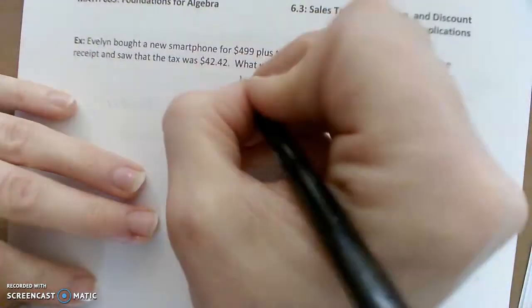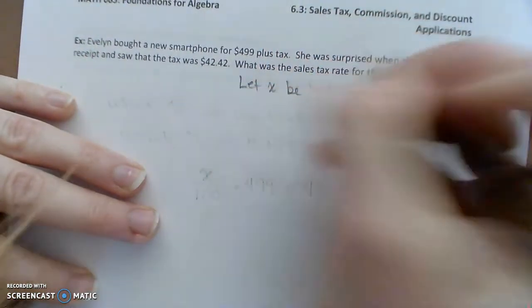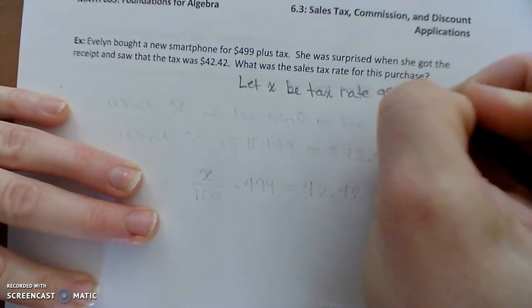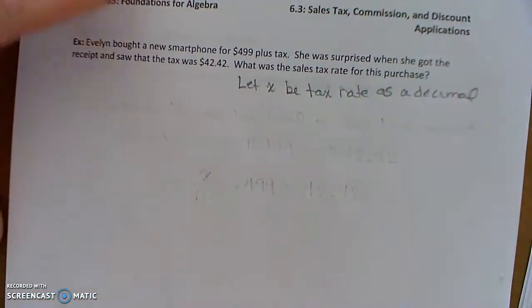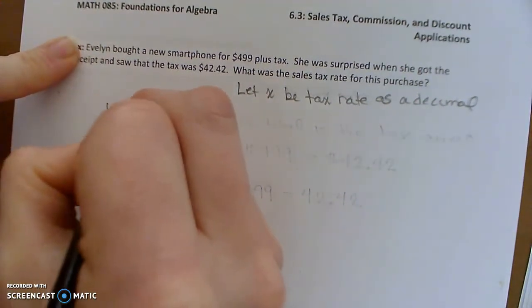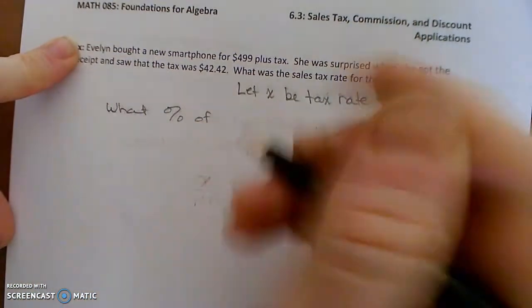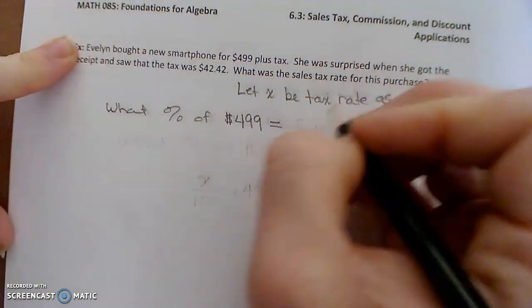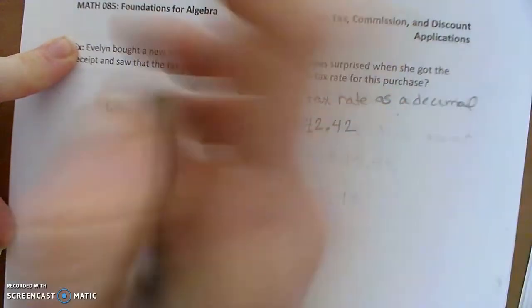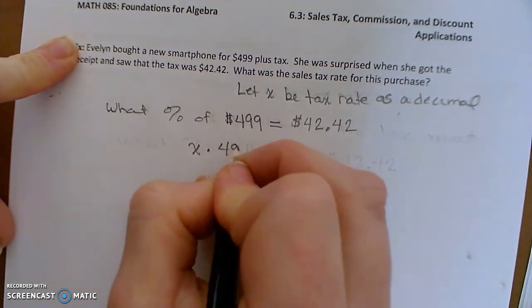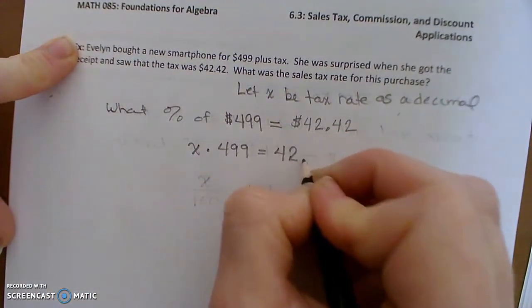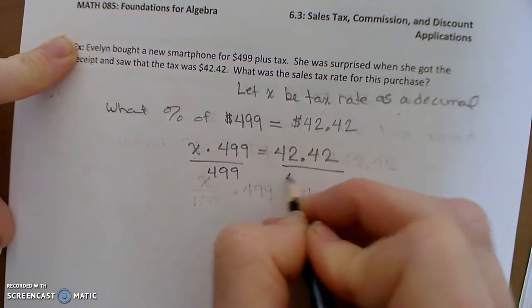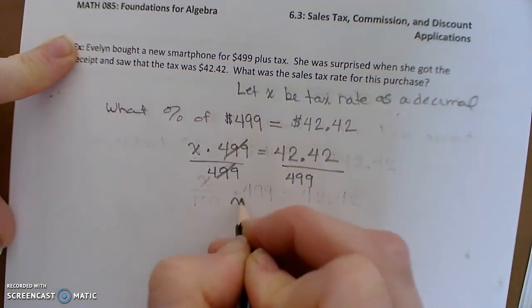All right, so first, let's declare our variable. Let's let X be the tax rate. And of course, we want to say the tax rate as a decimal. So then this question really is, what percent of the purchase price, $499, is the tax amount, which is $42.42. So you say X times $499 equals $42.42. We can solve for that percentage by dividing both sides by $499 to get X by itself.